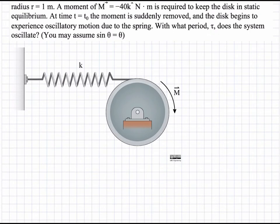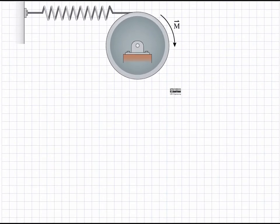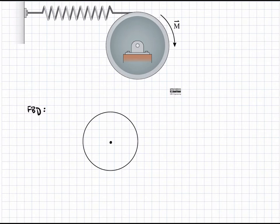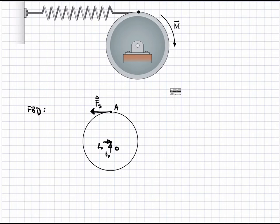First, we start with a free body diagram of the system. We start with our disk, our radius r, and we pin it about its center, which we're going to call O. We are going to have reaction forces at the center: Rx and Ry. And we're going to have our force due to the spring, which is going to pull to the left — we'll call this Fs, the force due to the spring. This acts at point A, so up here would be point A and down here would be point O. The distance between point A and O is the vector r of A with respect to O.